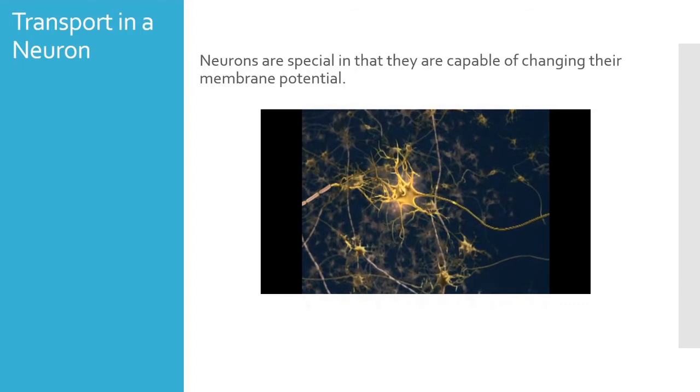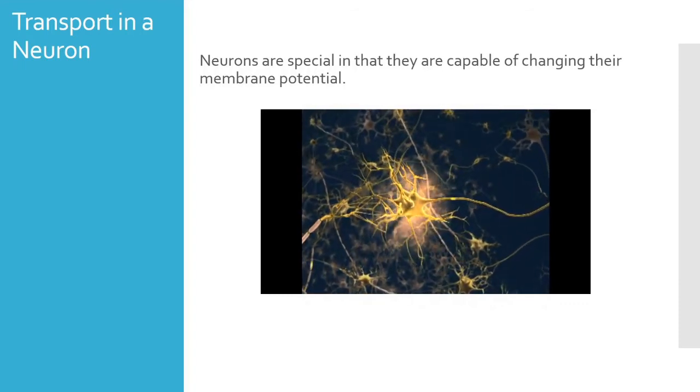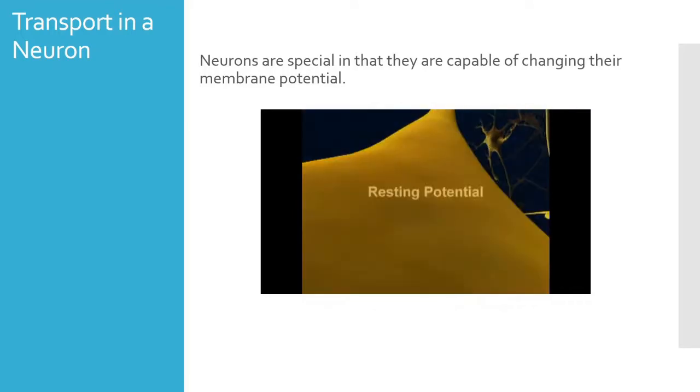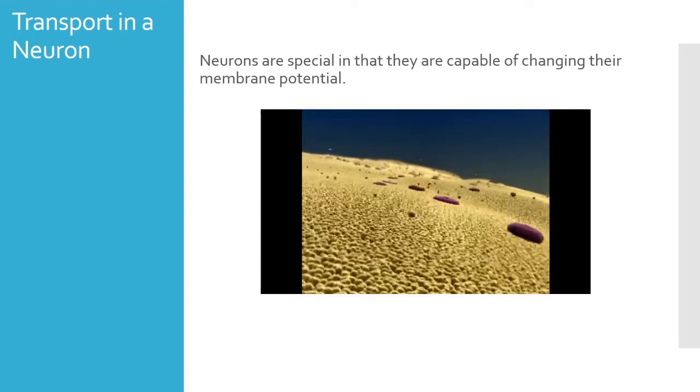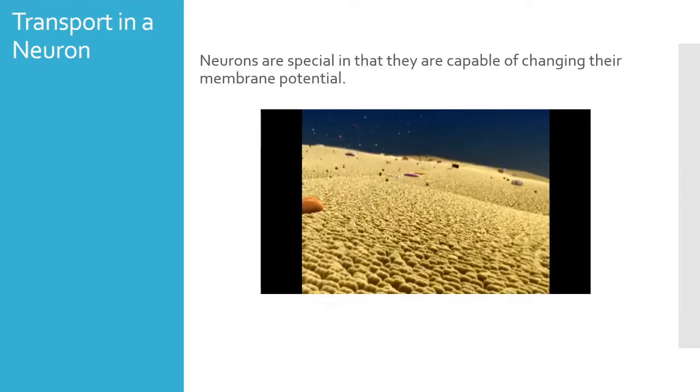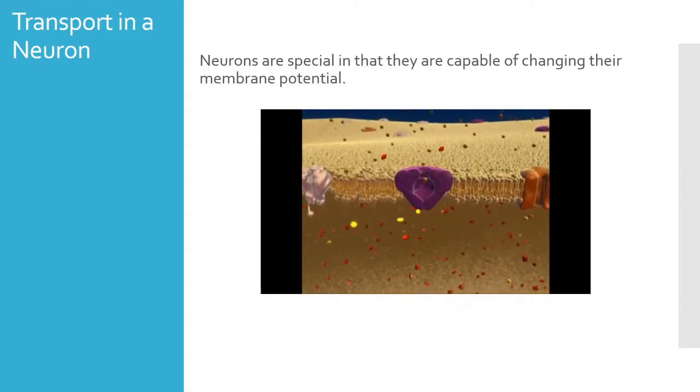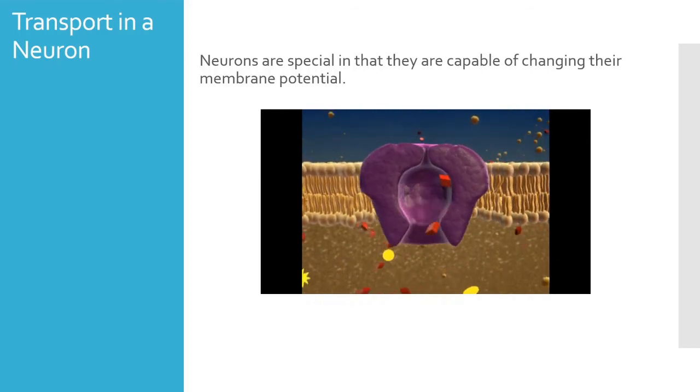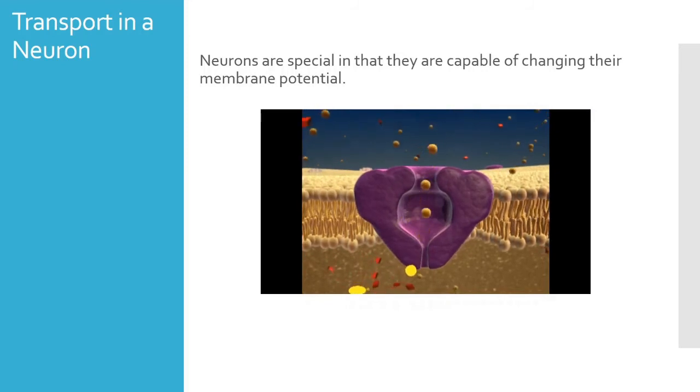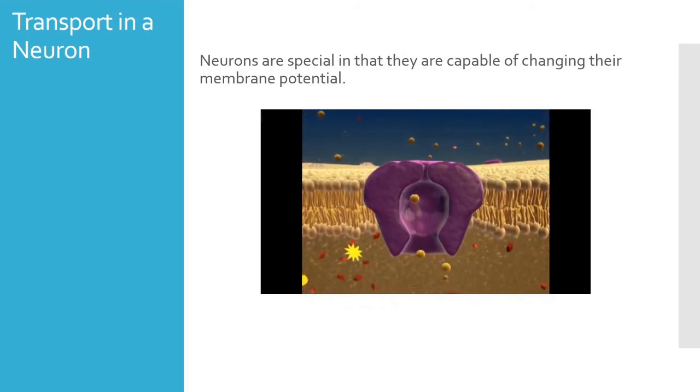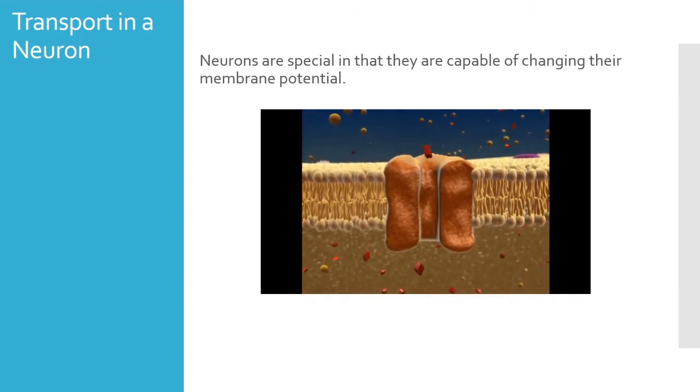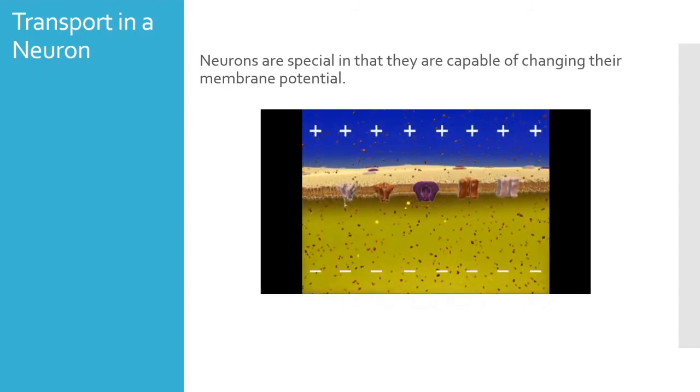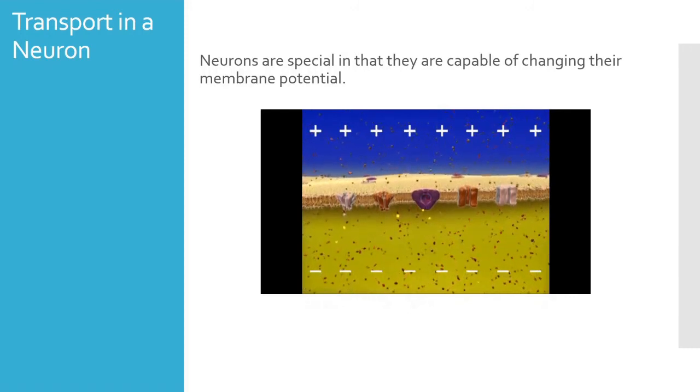A neuron may generate an electrical signal known as an action potential that travels down the length of the axon. Let's take a closer look at the plasma membrane of an axon. Even without an action potential, the axon is a busy place with many ions moving across its membrane. Much of this ion movement is driven by the sodium-potassium pump. Using energy from ATP, sodium-potassium pumps actively transport sodium ions out of the cell and potassium ions in, creating an uneven distribution of charge across the membrane. Some potassium channels are open all the time, allowing potassium ions to leave the cell. As a result of these ion movements, the inside of the cell is negative relative to the outside. This condition is called the resting potential.